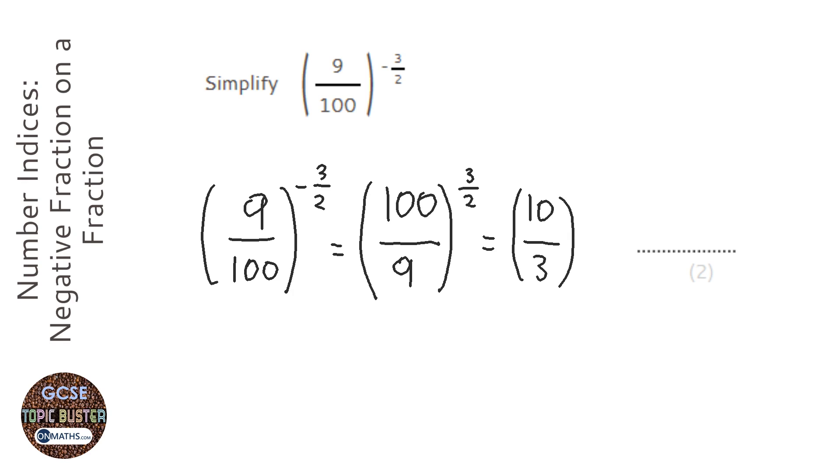And I've got rid of that over 2 now, so it's just to the power of 3. And then the final bit is I've just got to cube both the numbers. So 10 cubed is 1,000, and 3 cubed is 27.